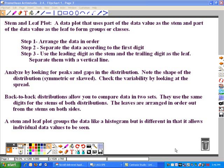The three steps are listed here, and you can record those in your notes. They'll probably make more sense after we demonstrate one in just a minute. We're going to arrange our data in order. We're going to separate the data according to the first digit, and we're going to use this leading digit as the stem and the digits that follow as the leaf. We're going to separate these using a vertical line.